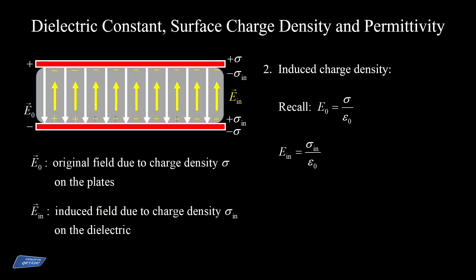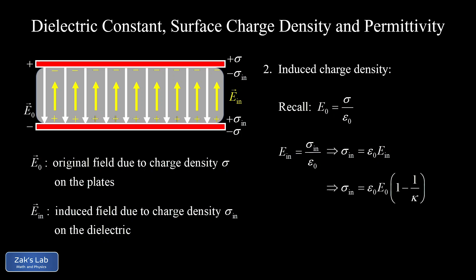The magnitude of the induced electric field is given by the induced surface charge density over the permittivity of free space epsilon_0. This gives us a way to write the induced surface charge density as epsilon_0 times E_induced. And in our previous section, we figured out how to solve for E_induced — that's E0 times the quantity (1 − 1/kappa).